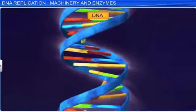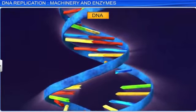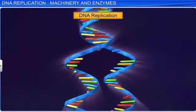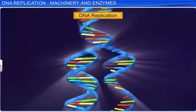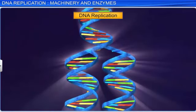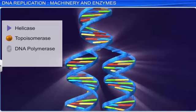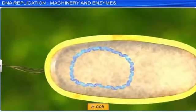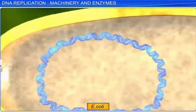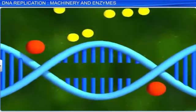DNA replication is a fundamental process that all living organisms undergo to copy their DNA. It is an elaborate process that requires several enzymes, such as helicases, topoisomerases, DNA polymerase, and DNA ligase, to catalyze the replication reaction. In a cell, DNA replication begins at a specific point. For example, bacteria E. coli has a definite region where the DNA replication originates.